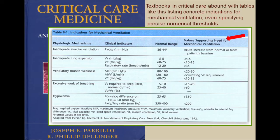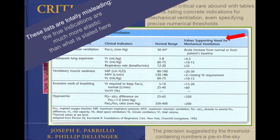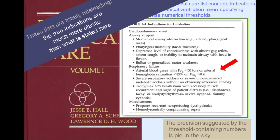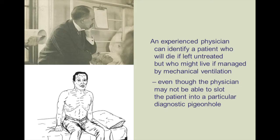Textbooks in critical care abound with tables listing concrete indications for mechanical ventilation, even specifying precise numerical thresholds. The precision suggested by these numbers is pie in the sky. The lists are totally misleading. The true indications are much more elastic than what is stated. So what is the real indication for mechanical ventilation? Most often it is a doctor standing at a bedside who says, 'I think this patient needs to be placed on a ventilator.'